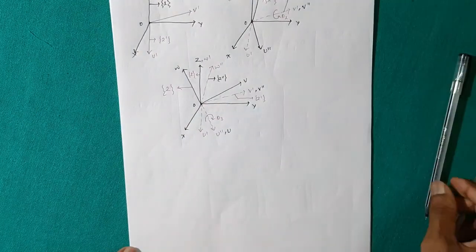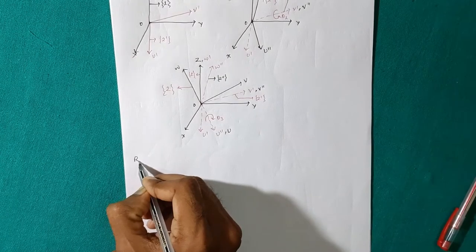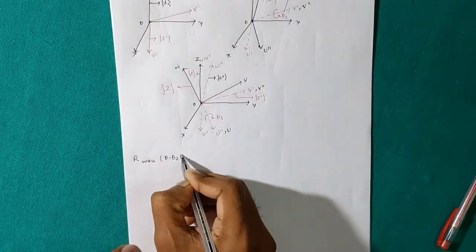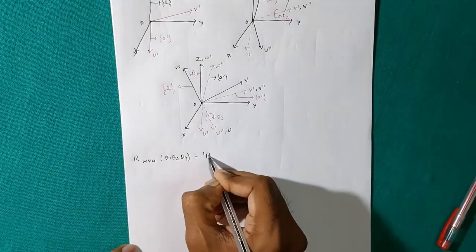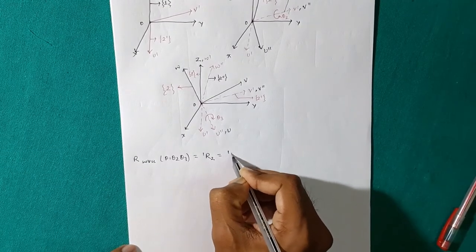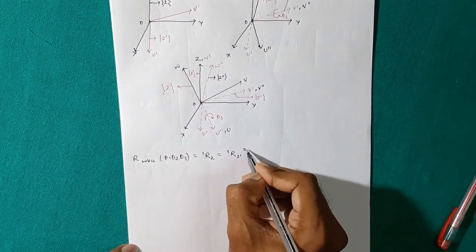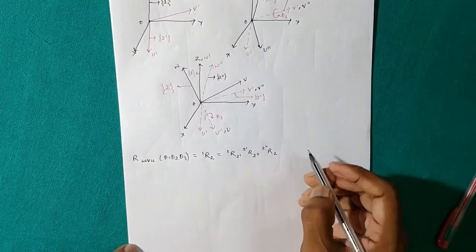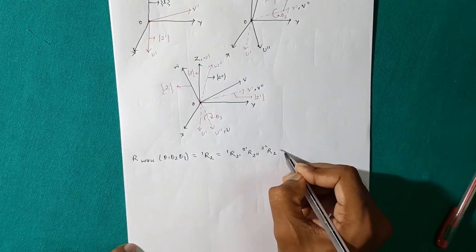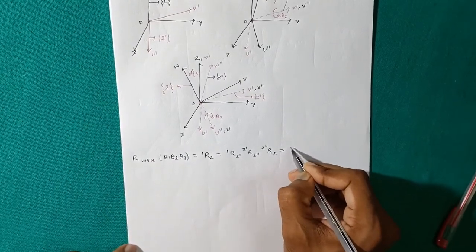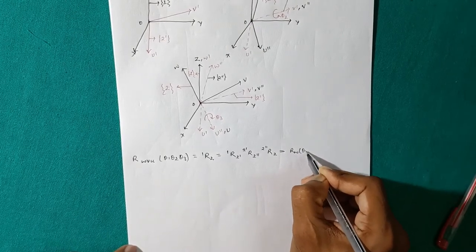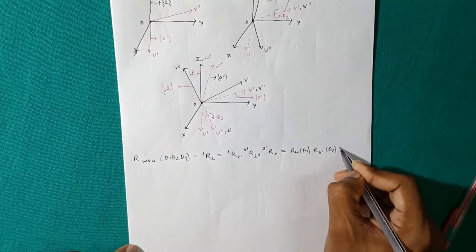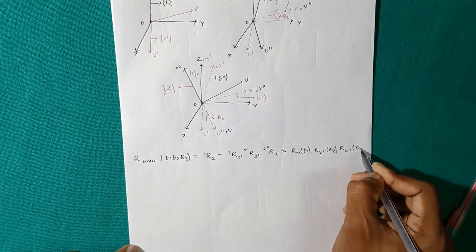So we will calculate the rotation matrix that is R_WVU for theta1, theta2, and theta3. It is 1 or 2 is equal to 1 or 2 dash, 2 dash or 2 double dash, 2 double dash or 2. So it can be written as R_W theta1, R_V dash theta2, R_U double dash theta3.